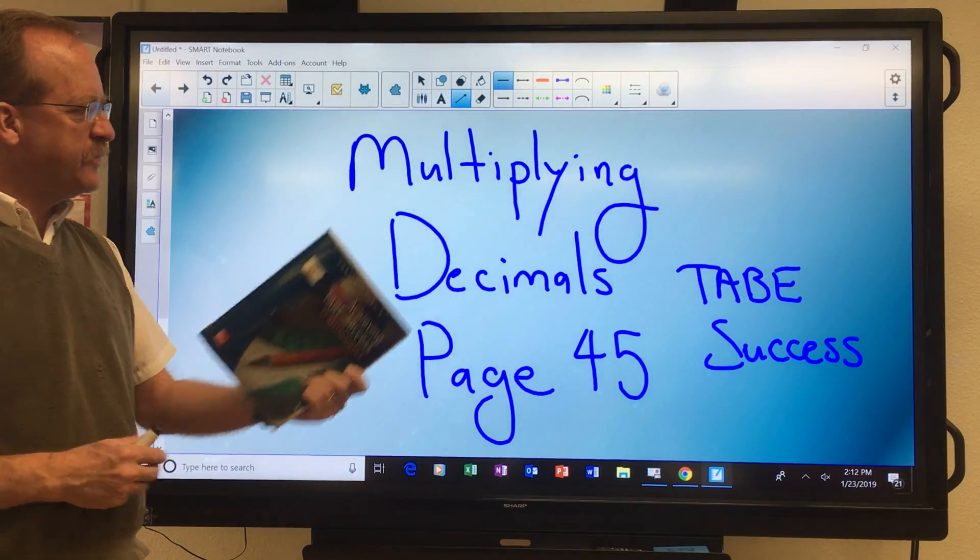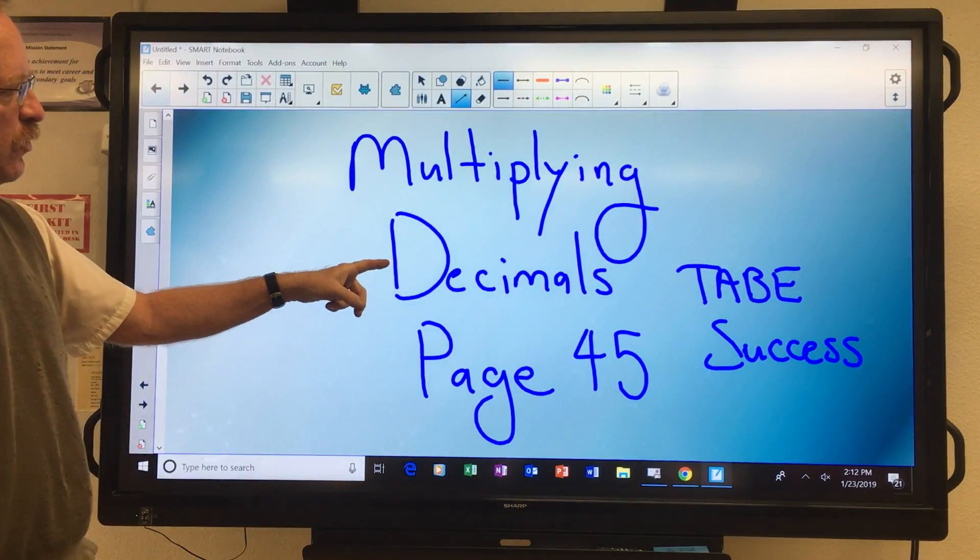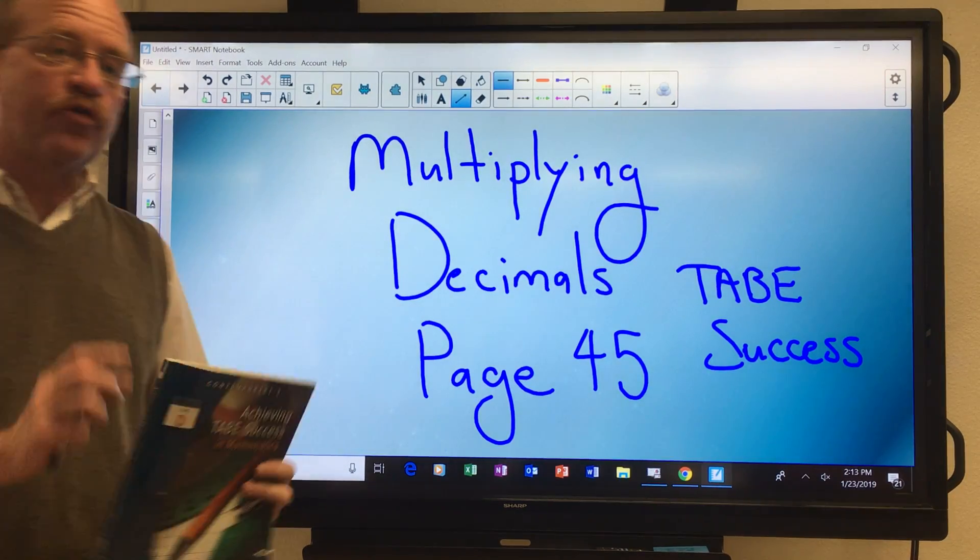Hi, welcome back. So we're in your Tape Success Book. This time we're multiplying decimals, and we're on page 45.